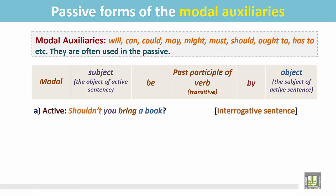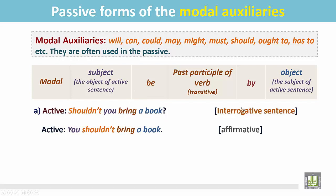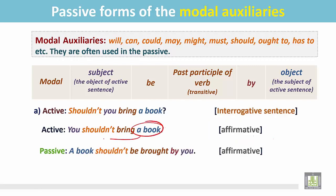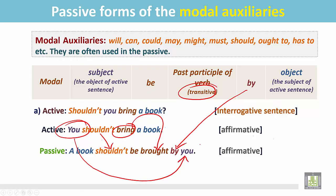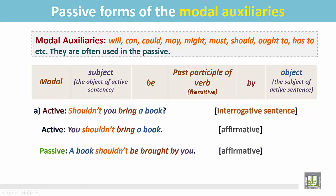Another example: 'Shouldn't you bring a book?' You bring what? A book. It is the object for the verb 'bring'. The sentence is in the interrogative form. Change this sentence into a statement: 'You shouldn't bring a book.' The sentence is now in the affirmative form. In the passive, the object of the active sentence becomes the subject: 'a book'. Then the modal 'shouldn't', followed by 'be'. After that the verb is in the past participle form — 'brought' — by the preposition, and the subject of the active sentence becomes the object in the passive: 'you'. 'A book shouldn't be brought by you.'